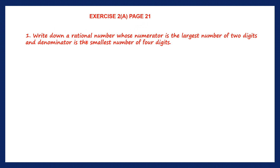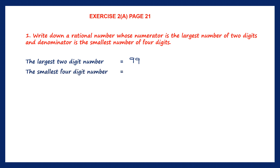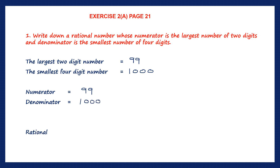Question 1: write down a rational number whose numerator is the largest number of 2 digits and the denominator is the smallest number of 4 digits. The largest 2-digit number is 99. The smallest 4-digit number is 1,000. We've been asked to write the numerator as the largest 2-digit number, which is 99, and the denominator as the smallest 4-digit number, which is 1,000. So the rational number will be 99 by 1,000.